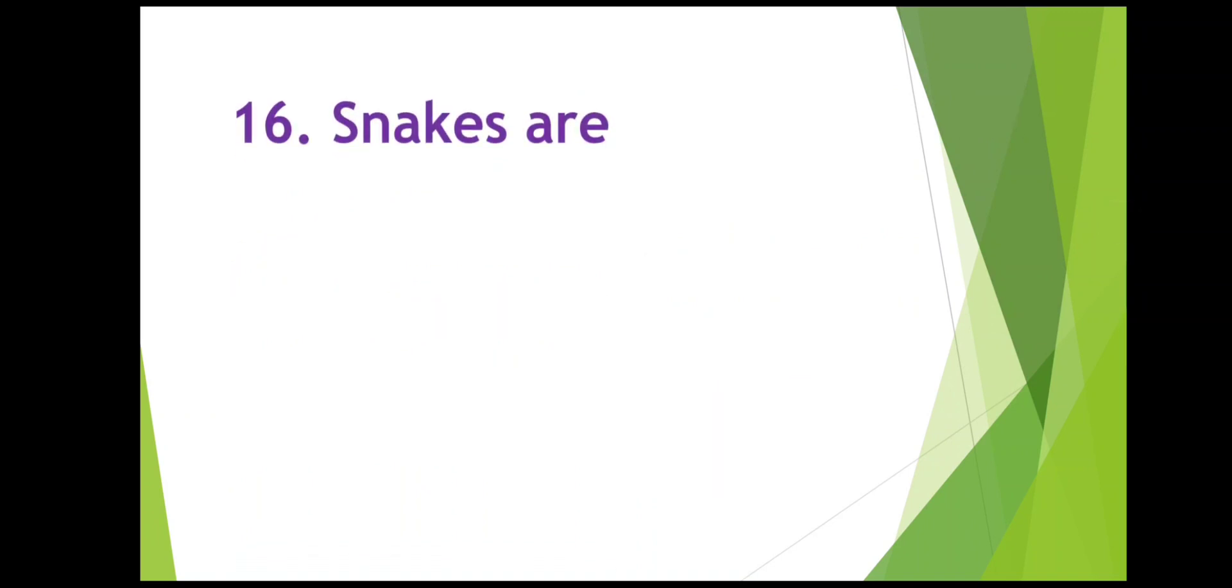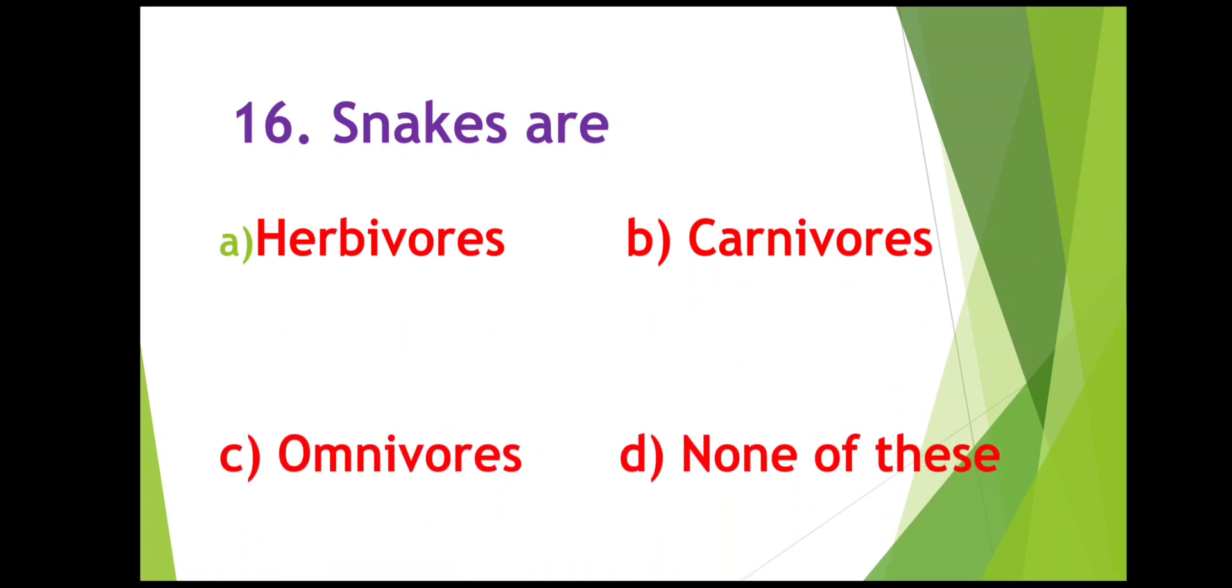Snakes are herbivores, carnivores, omnivores, or none of these. What are snakes? They are herbivores, carnivores, or omnivores. The right answer is carnivores, flesh eating, only flesh eating. So herbivores are plant eating, carnivores are flesh eating, and omnivores eat plant and flesh. So snakes are carnivores, they only eat flesh or meat.